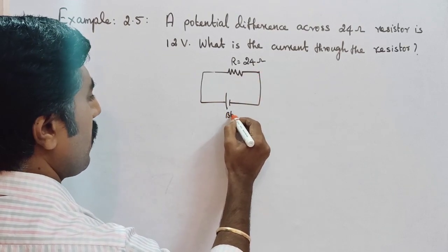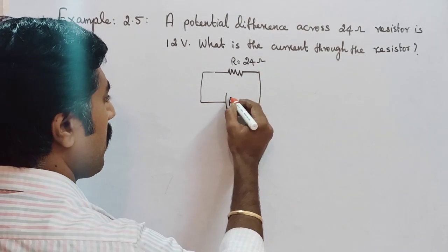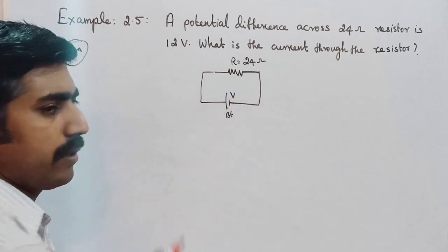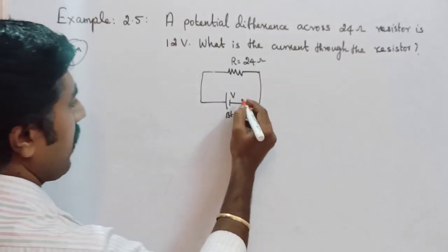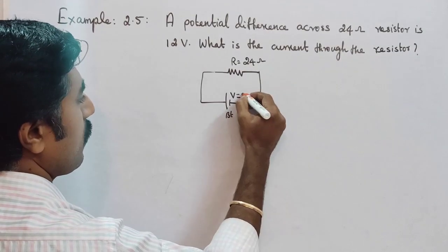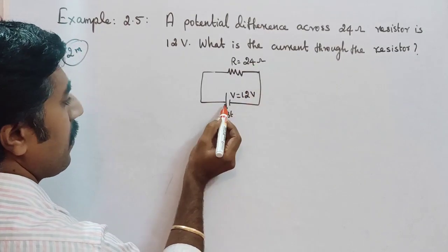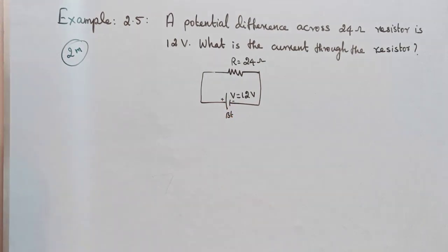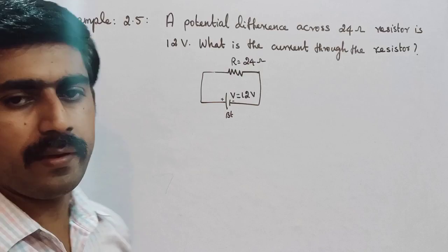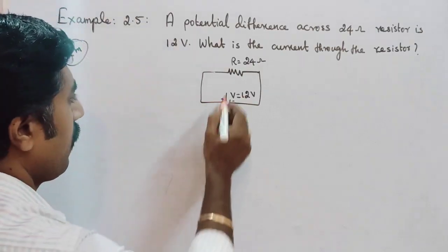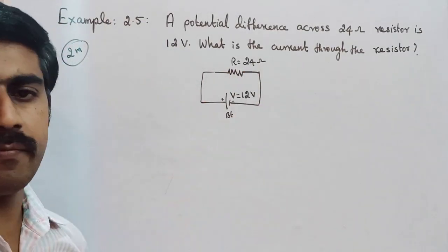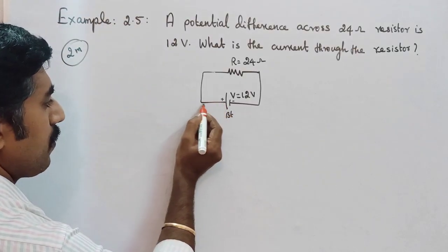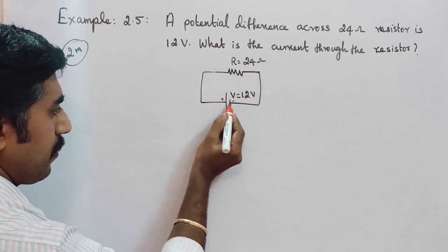So this is a battery of potential difference V, so V is equal to 12 volt. We know that the left side terminal is positive and the right side terminal is negative. So the direction of electric current through the resistor - the flow of the electric current from positive terminal of your battery to the negative terminal of your battery.